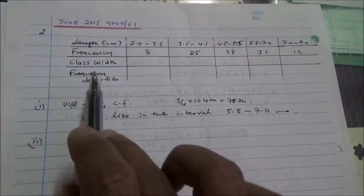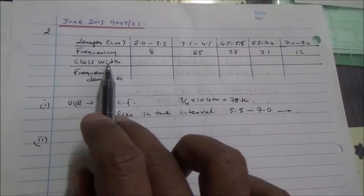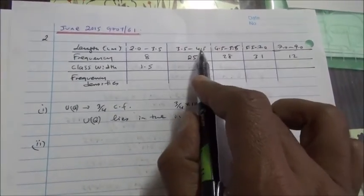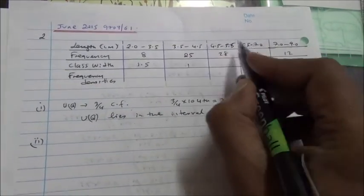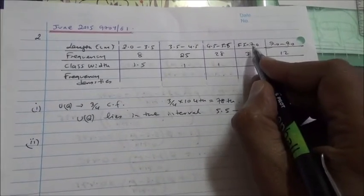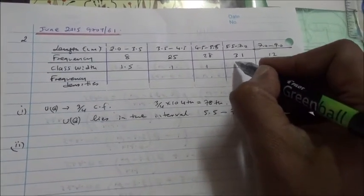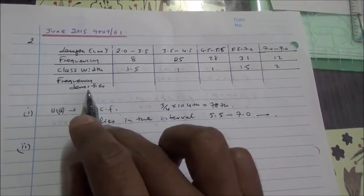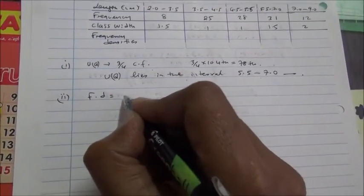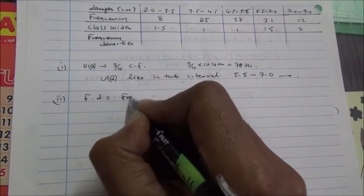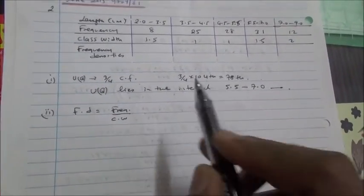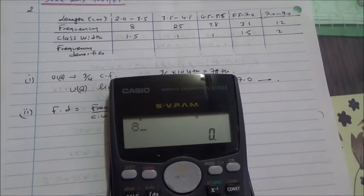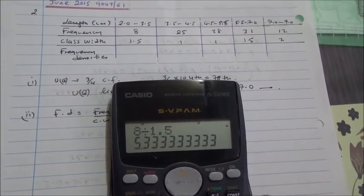To be able to draw a histogram, we have to find the frequency densities and the class width. What is the class width? 3.5 minus 2 is 1.5. 4.5 minus 3.5 is 1. 5.5 minus 4.5 is 1. 7.0 minus 5.5 is 1.5. And also 9 minus 7 is 2. For the frequency densities, we know that frequency density is equal to frequency divided by the class width. What is the frequency here? 8. 8 divided by 1.5. Do it on the calculator.